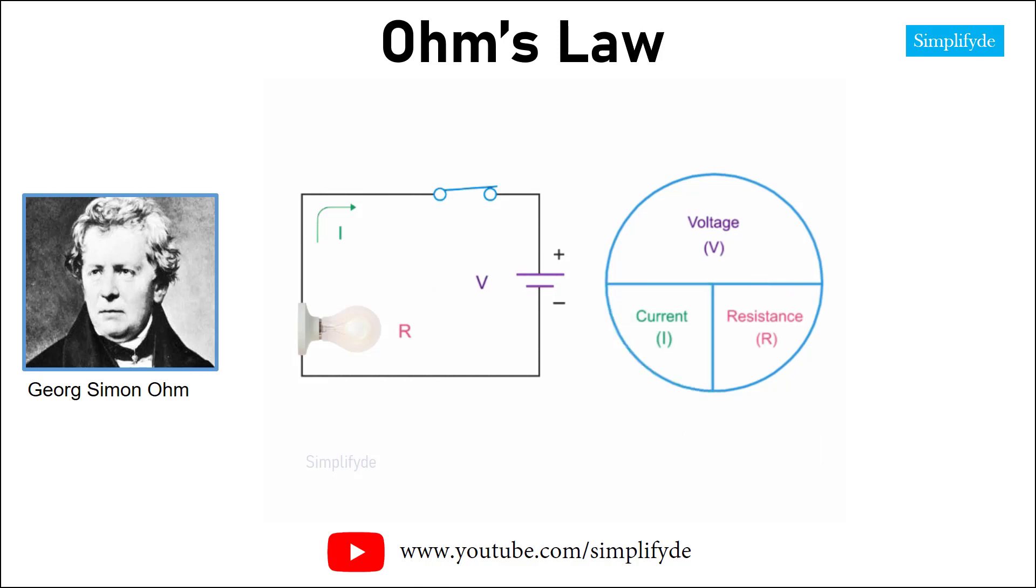Using the Ohm's law circle, if you know the values of any two variables, you can solve for the third. If you have a current of 2 amps and a light bulb with a resistance of 4.5 ohms, the voltage would be 2 times 4.5, or 9 volts.